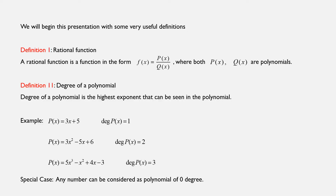We will begin with some very useful definitions. Definition number one: What is a rational function? A rational function is a function written in the form f(x) equals p(x) over q(x), where both p(x) and q(x) — both numerator and denominator — are polynomials.